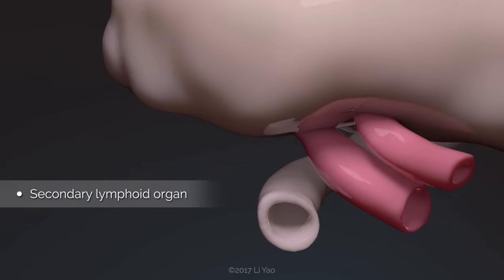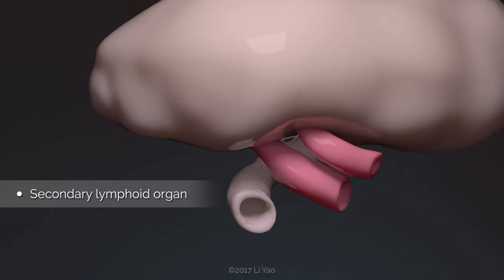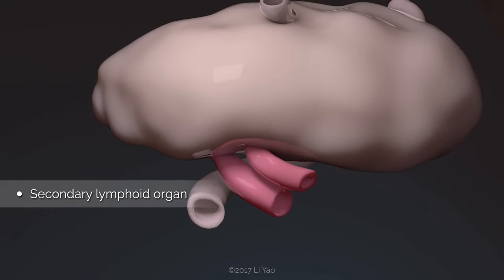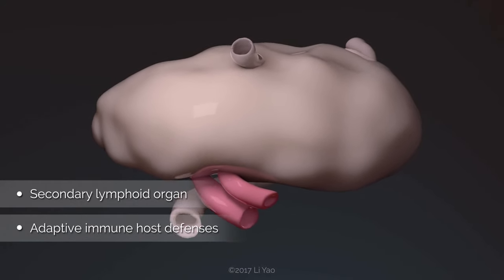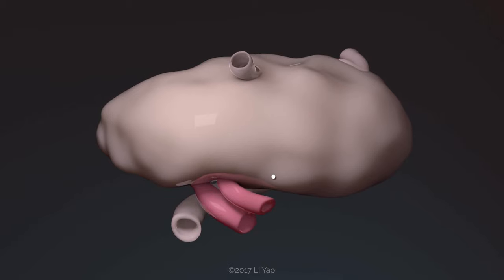Lymph nodes are secondary lymphoid organs with anatomical features that support initiation of adaptive immune host defenses. This model depicts the lymph node of a mouse, which is normally less than 10 mm in length.